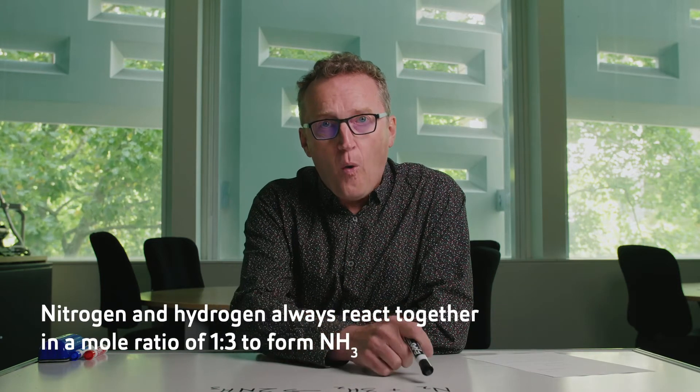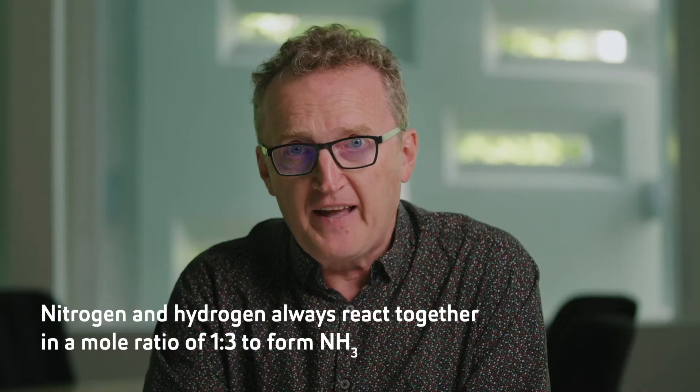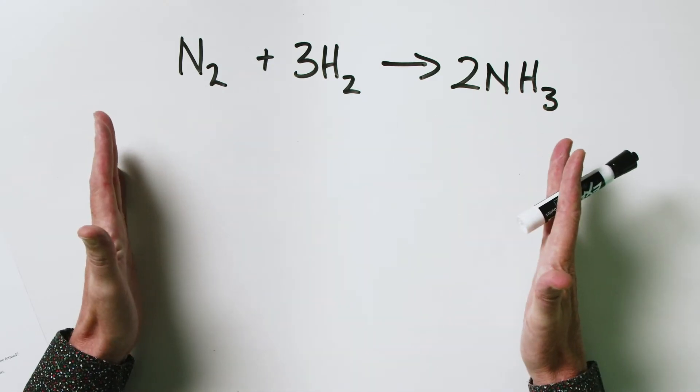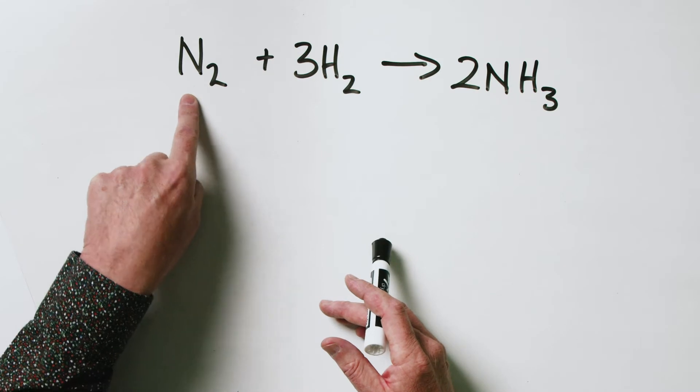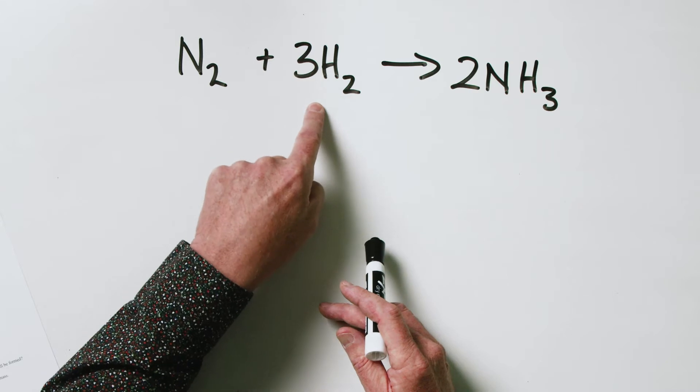That's what I meant by the mole ratio. Nitrogen and hydrogen always react together in a mole ratio of one to three. That's a really important concept, and it is what balanced chemical equations are very useful for when it comes to stoichiometry problems. The mole ratio tells us that for every mole of nitrogen that reacts, we're going to require three moles of hydrogen.